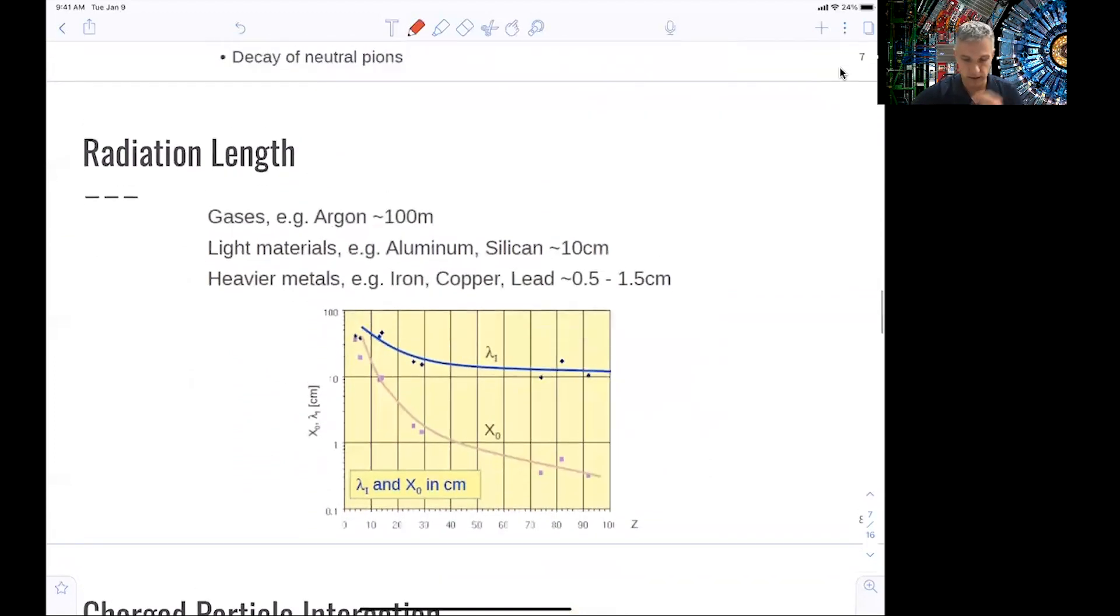So here, just to give you a feel for orders of magnitude, radiation lengths given, the nuclear and the electromagnetic radiation lengths given as a function of z. For gases, we are talking about hundreds of meters. For light material, aluminum and silicon, we're talking about 10 centimeters. And for heavy materials, specifically lead, we're talking about sub-centimeter radiation lengths.